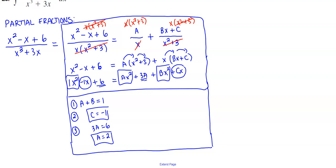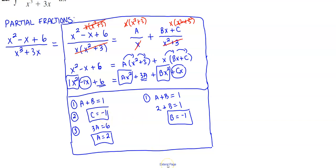We know a is 2 and c is negative 1. Using equation 1 to solve for b: a plus b equals 1, and since a is 2, subtracting 2 from both sides gives b equals negative 1. So we have a equals 2, b equals negative 1, and c equals negative 1. Now let's write out our integral.